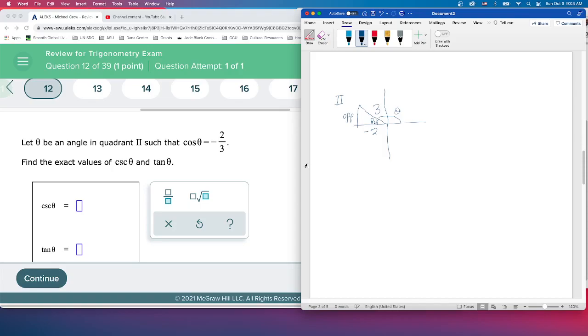If we need that opposite side—and we're thinking ahead, cosecant is related to sine which needs the opposite, tangent is opposite over adjacent—so yeah, we need this opposite side. We could think of that as being the B side.